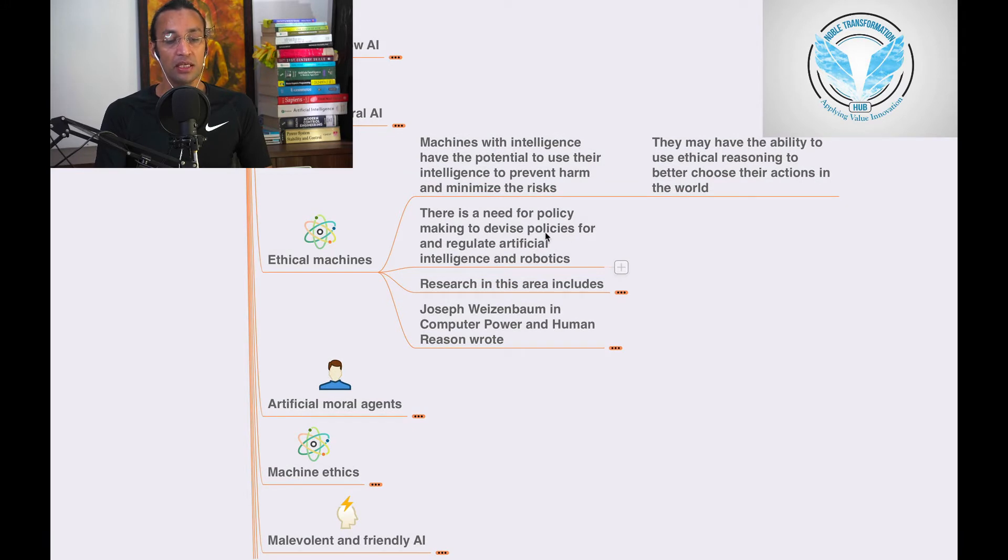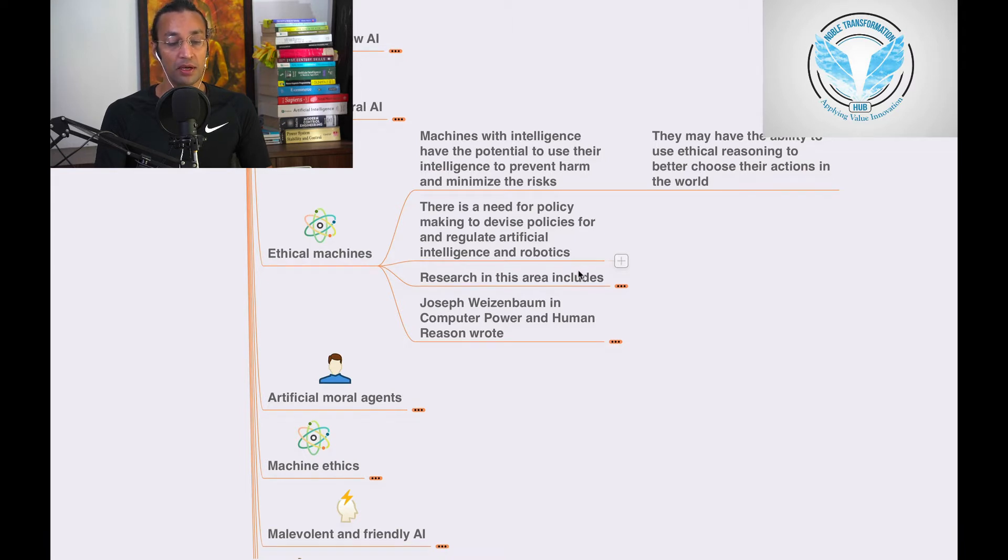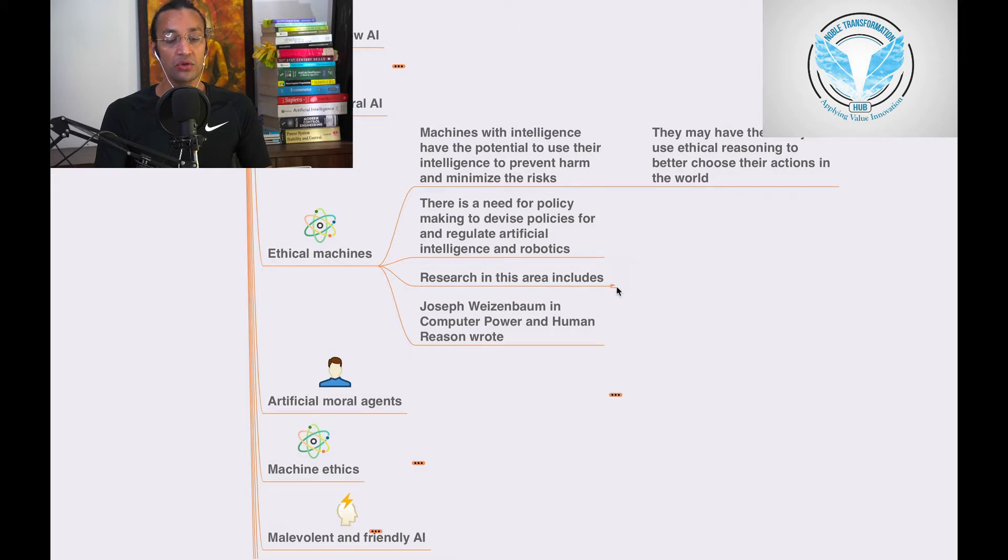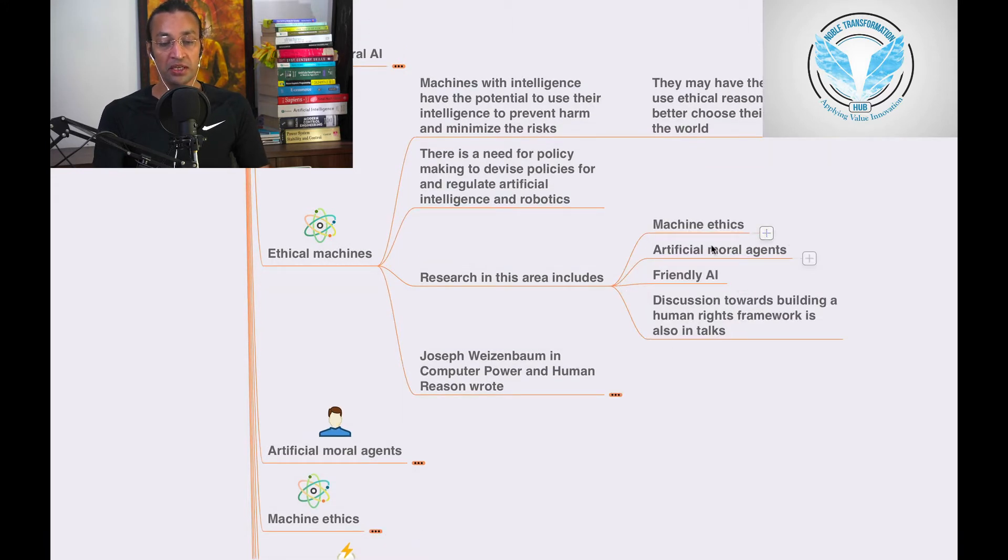There is a need for policymaking to devise policies that regulate artificial intelligence and robotics. Research in this area includes machine ethics, artificial moral agents, and friendly AI.